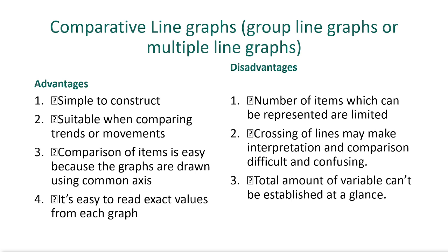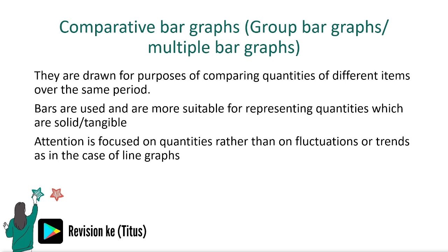Let's look at a comparative bar graph. They are drawn for purposes of comparing quantities of different items over the same period. Bars are used and are more suitable for representing quantities which are solid or tangible. Attention is focused on quantities rather than on fluctuations or trends as in the case of line graphs. So: bar graphs focus on quantities; line graphs focus on fluctuations or trends.